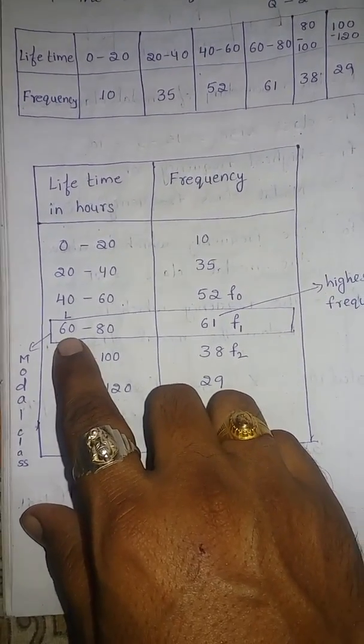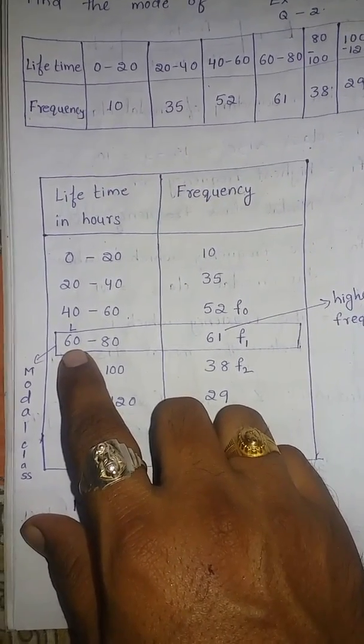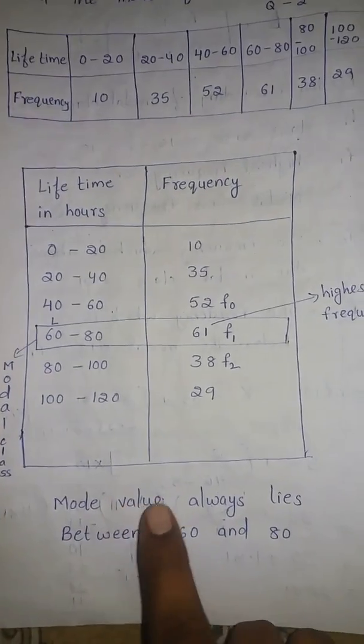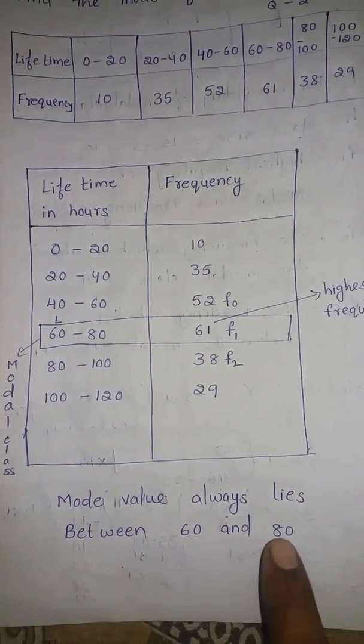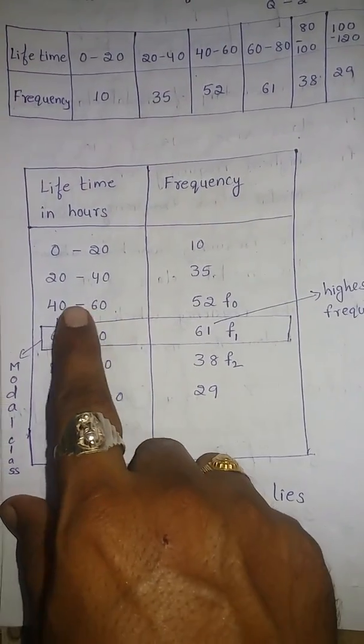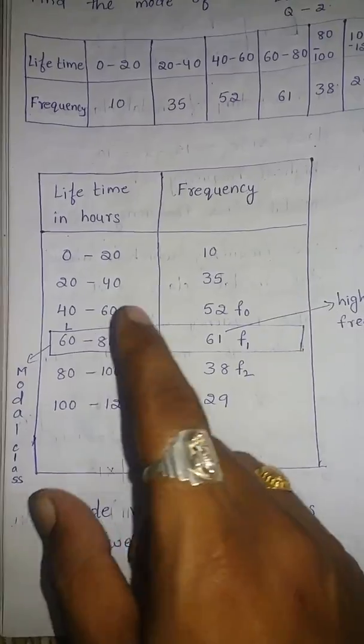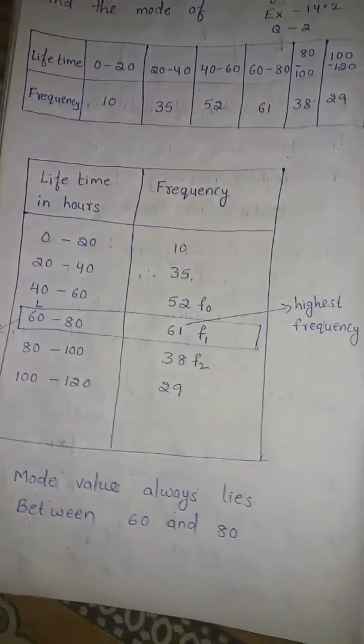For calculation we use lower boundary 60 as a lower boundary. Mode always lies between 60 and 80, our answer should be in between 60 and 80. If it is coming more than 80 means your answer is wrong.